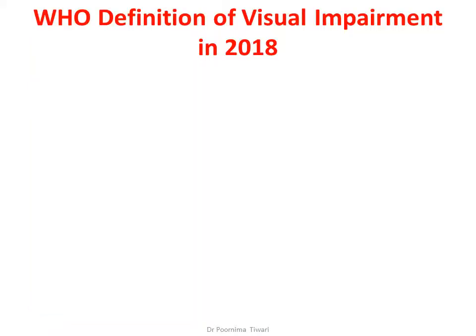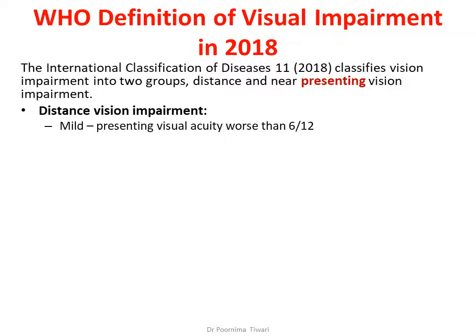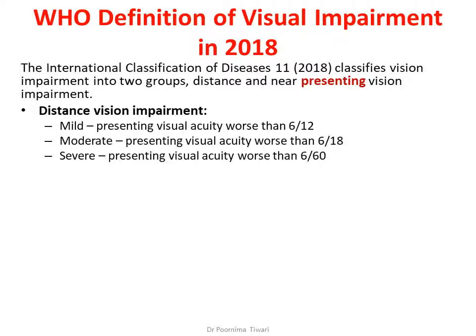In 2018, the WHO definition of visual impairment was changed once again. It was divided into two groups: distance and near presenting vision impairment. Distance vision impairment was classified as mild if presenting visual acuity was less than 6/12 but more than 6/18; moderate below 6/18 and above 6/60; severe worse than 6/60; and blindness when presenting visual acuity was worse than 3/60, as before.